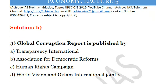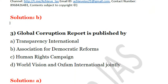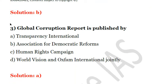Question 3 — The Global Corruption Report is published by: A) Transparency International, B) Association for Democratic Reforms, C) Human Rights Campaign, or D) World Vision and Oxfam International jointly. The answer is Transparency International. Answer: A.